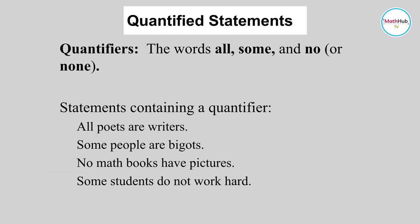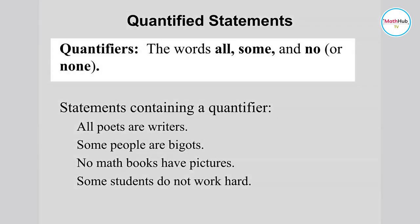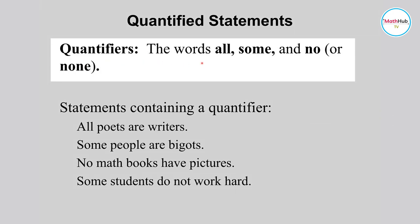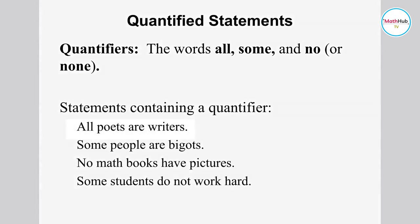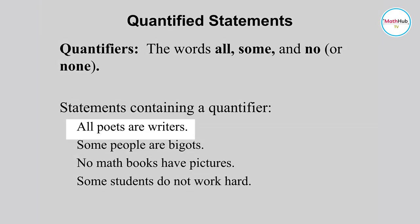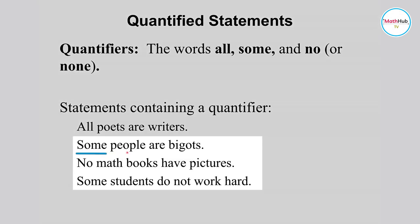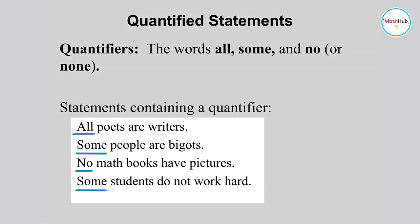Now let's discuss quantified statements. Quantified statements are statements that have quantifiers. The quantifiers are the words 'all,' 'some,' and 'no' or 'none.' For example: 'All poets are writers,' 'Some people are bigots,' 'No math books have pictures,' and 'Some students do not work hard.' These are all examples of quantified statements.